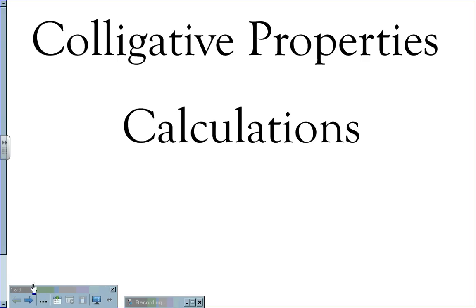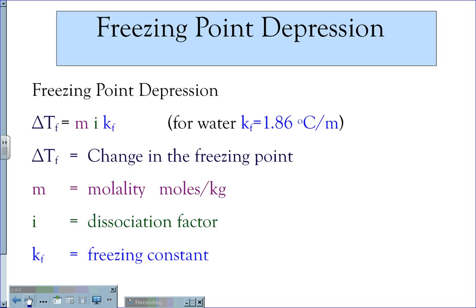Calculating Colligative Properties. For colligative properties, we will be able to calculate the freezing point depression. Freezing point depression uses the equation delta Tf equals M·I·Kf, where delta Tf is the change in the freezing point temperature, M is the molality, measured as moles of solute over kilograms of solution, I is the dissociation factor, and Kf is the freezing constant. For water, the freezing constant is negative 1.86 degrees Celsius per molal.